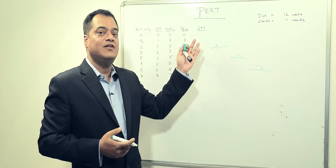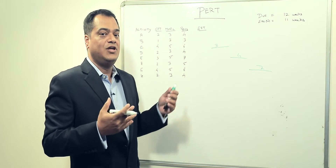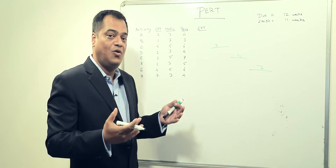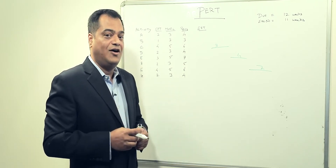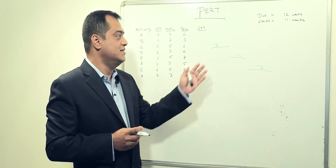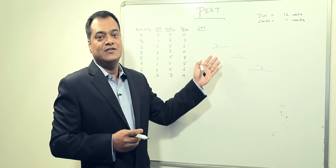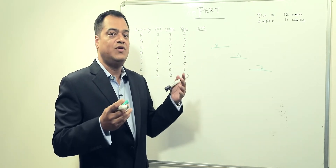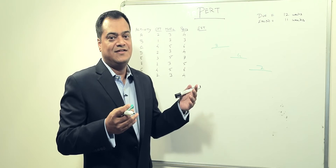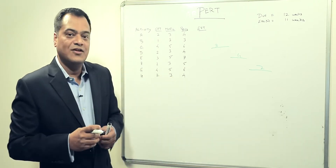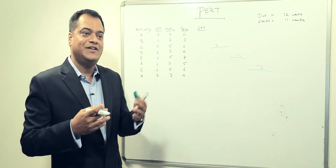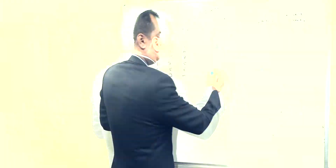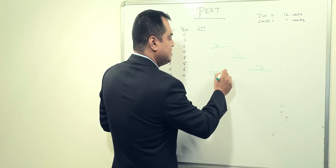In the case of PERT, we are working with uncertainty — we don't know what the certain duration is going to be. We are mostly working with guesses, and when we are guessing we have three types of estimates: one is optimistic, one is pessimistic, and one is most likely.